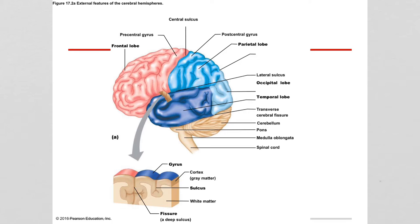We're going to go through some of the major sulci and talk about how they divide the brain into different regions. First we're going to look at the central sulcus, which is a crevice that divides the frontal lobe from the parietal lobe.